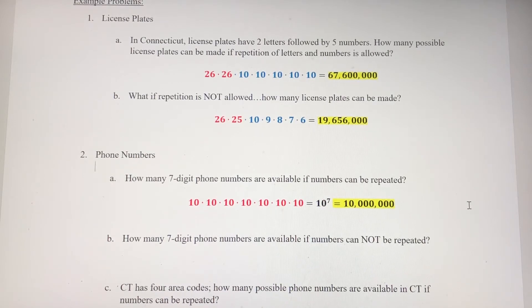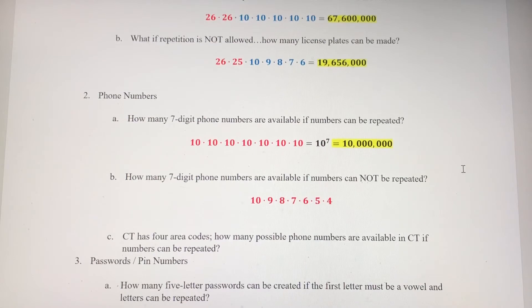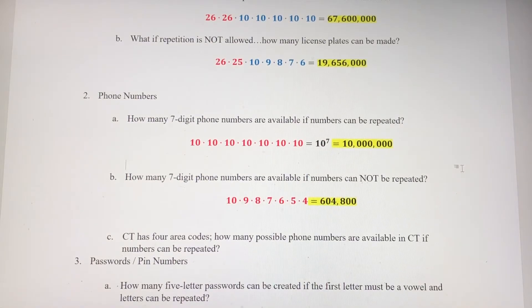If we eliminate repetition, then it's going to be 10 for the first number, then nine options for the second number, and so on down until we get to our seventh number, and there would be four possibilities there. So the number of seven digit phone numbers available, if numbers can't be repeated, is only 604,800.